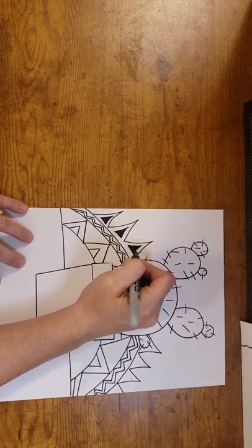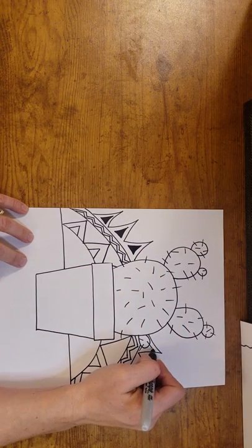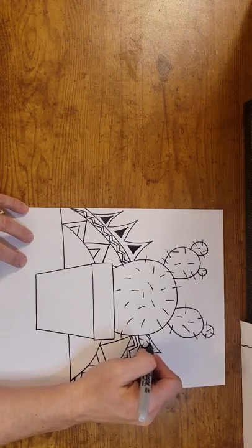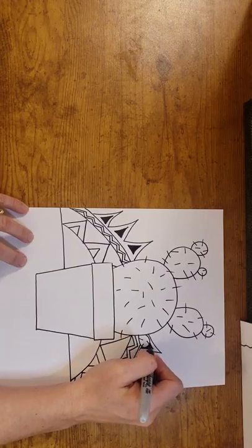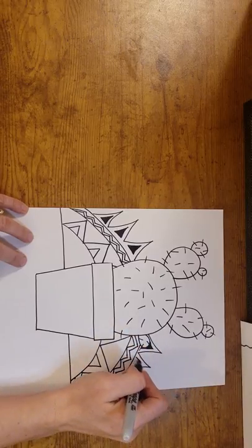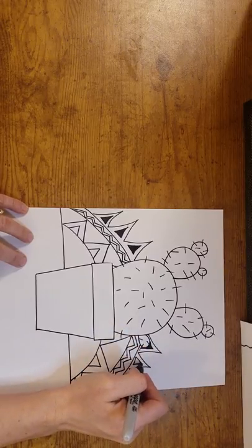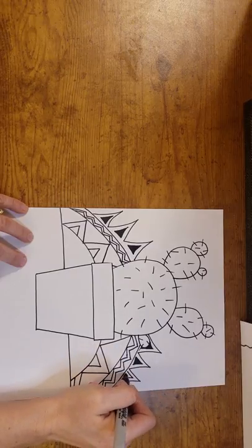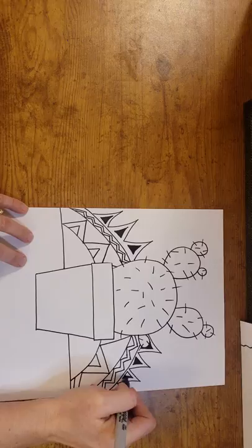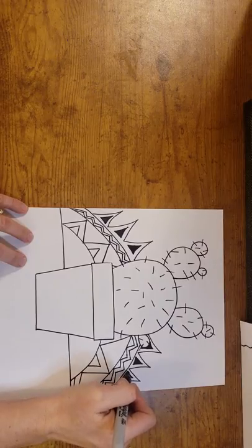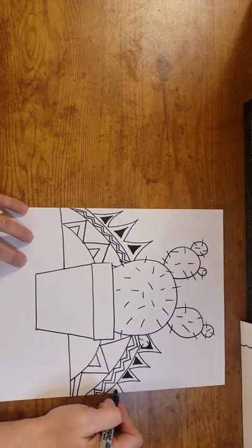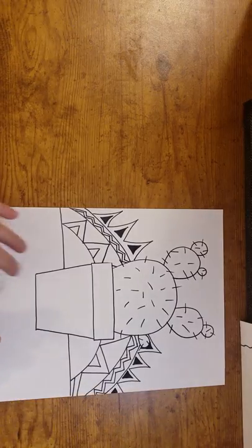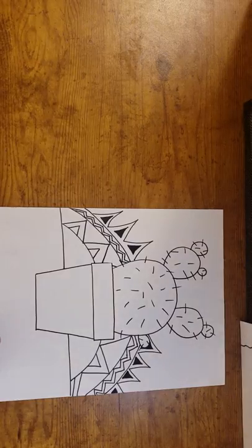You can make thick lines, thin lines, thick spaces, thin spaces. I'm going to cover that little prickly thorn up. That is okay. Almost finished. So I have my sun going down behind my cactus.